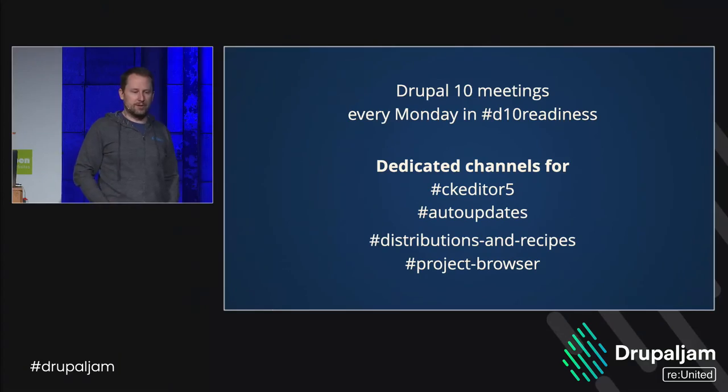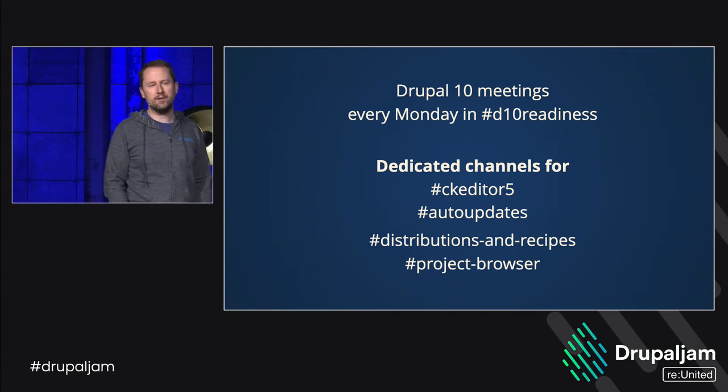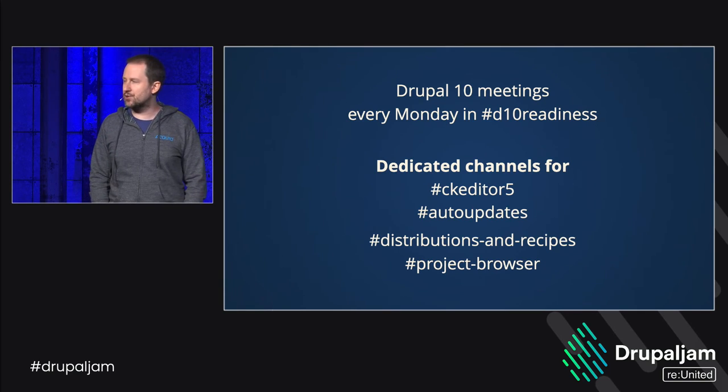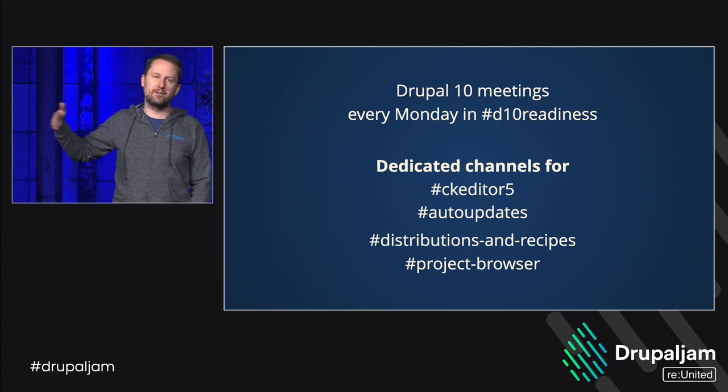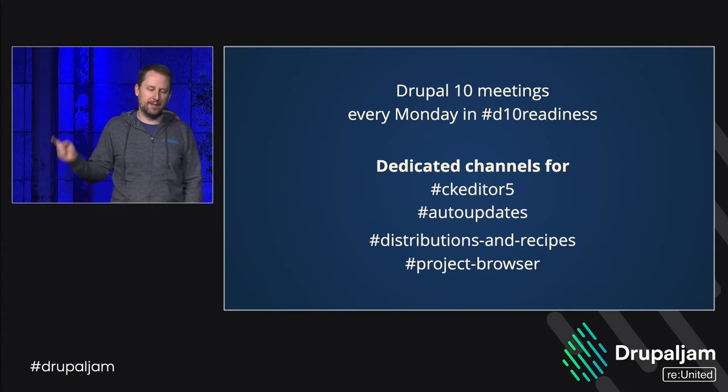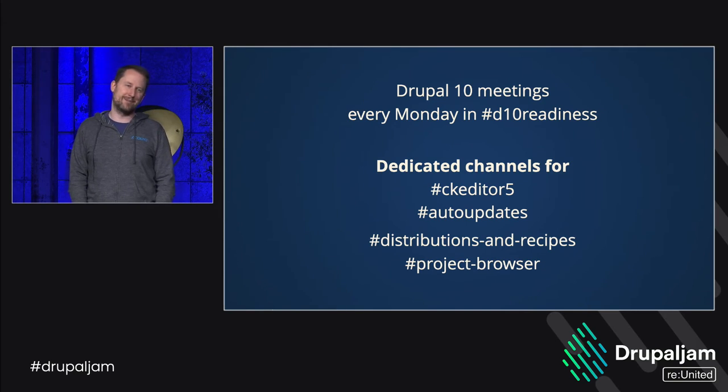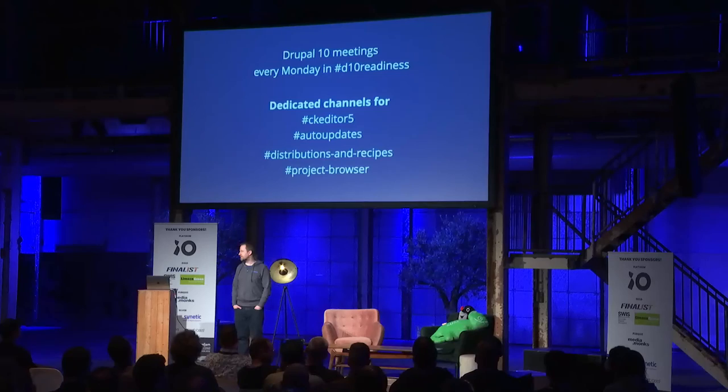If you want to get involved, there are Drupal 10 meetings every Monday in the D10 readiness channel. CKEditor 5, auto updates, distributions and recipes, and project browser all have their own channels. Project browser and automatic updates are contributed modules you can try out now. Distributions and recipes is in the ideation phase — post your ideas there. Drupal 10 is in the weeds with three months to complete everything, so your help is needed — please join the channel and get involved.